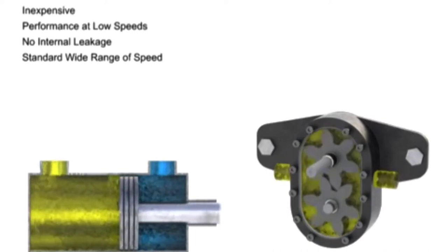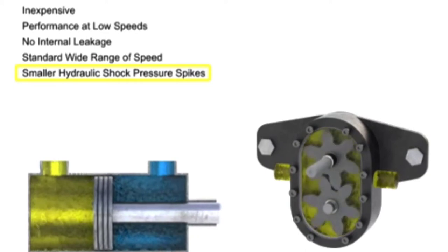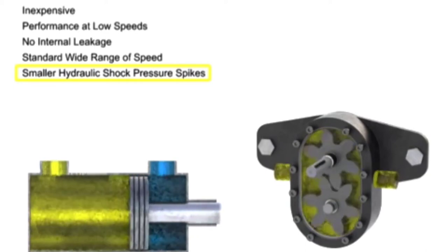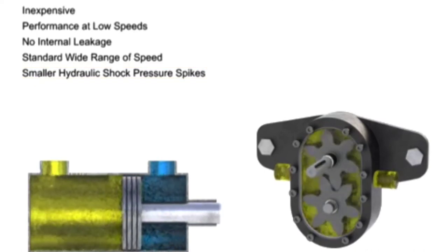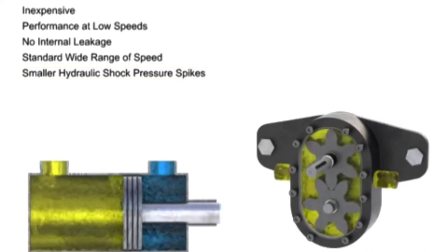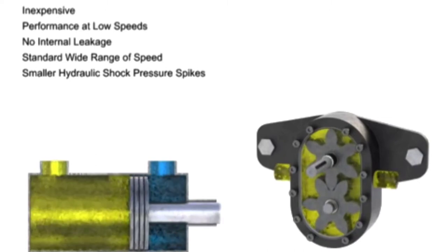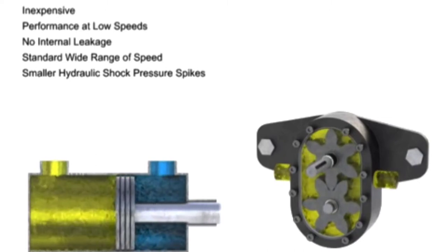Cylinders also produce smaller pressure spikes, called hydraulic shock, when stopped suddenly. Fluid motors tend to produce a much larger amount of hydraulic shock if stopped suddenly, due to the momentum energy contained in their rapidly rotating loads.